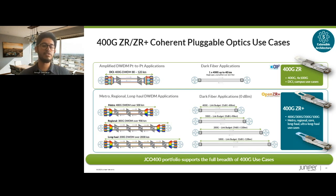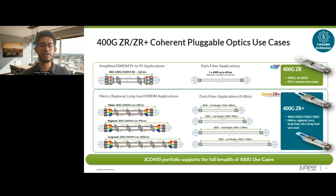ZR Plus can also be deployed in an unamplified topology over dark fiber, getting roughly 80 kilometers of reach in 400-gig mode and up to 120 kilometers in 100-gig mode — for when a simple extended-reach router interconnect architecture is all you really need.